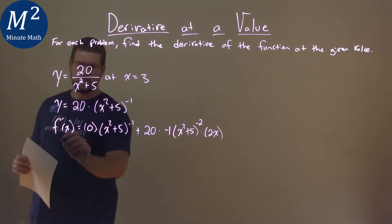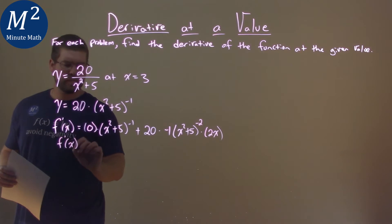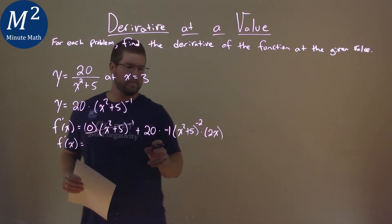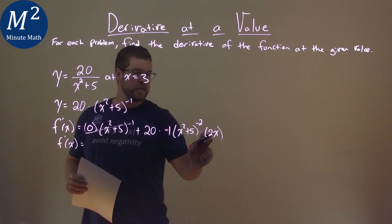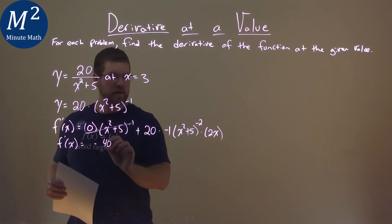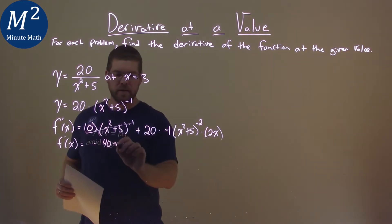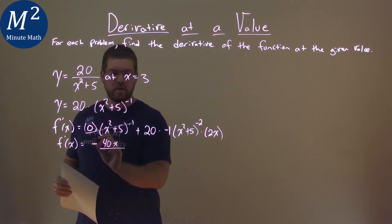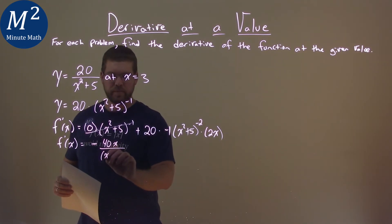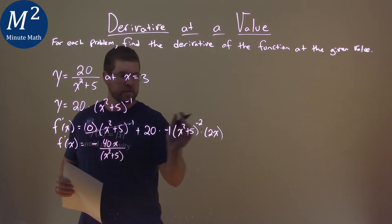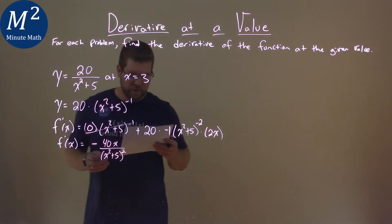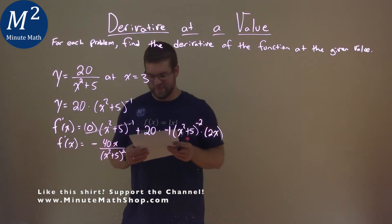Luckily for us, this simplifies pretty easily. The 0 causes all that to be cancelled out — not too bad. The negative 1, 2, and 20 become negative 40 in the numerator, giving us negative 40x all over x squared plus 5 in the denominator — and don't forget to square it.